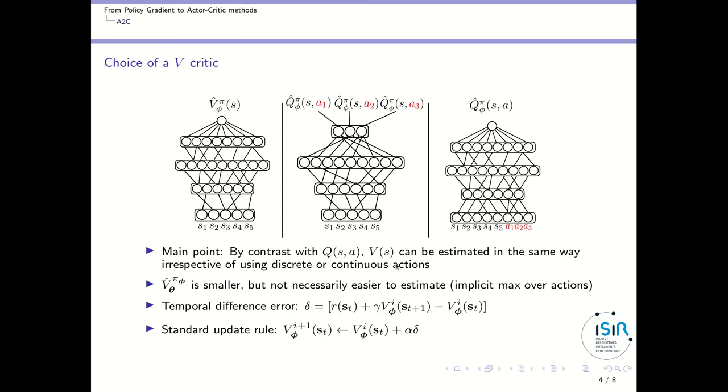Another point is that one could think learning this network is a little easier because it's smaller—you have fewer outputs in one case and fewer inputs in the other. However, this V network is smaller but not necessarily easier to estimate, because in the V function you have an implicit max over the actions. V(s) is the max over actions of the Q values of (s,a).